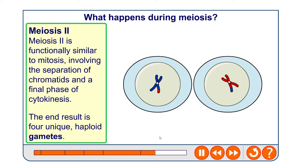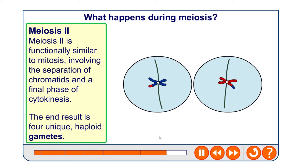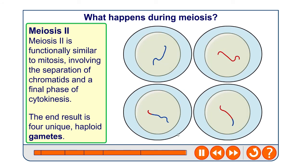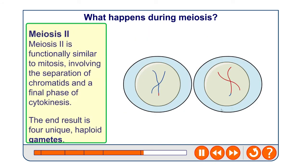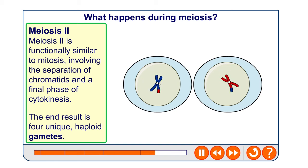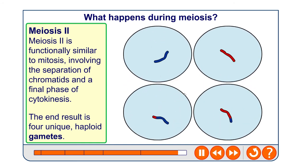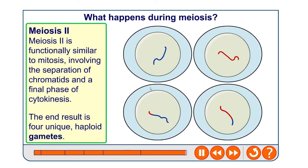Meiosis two is conceptually similar to mitosis. It involves the separation of the chromatids and a final phase of cytokinesis. You can see in the animation that the spindle forms and pulls the chromatids apart at the centromere. We end up with four unique haploid gametes, and genetic diversity is introduced through both crossing over and the independent assortment process. We'll look at both of these in more detail later.